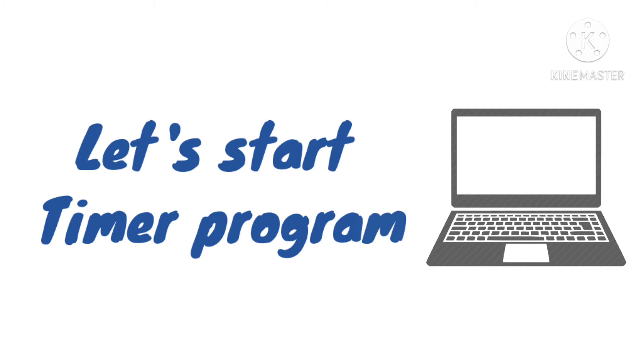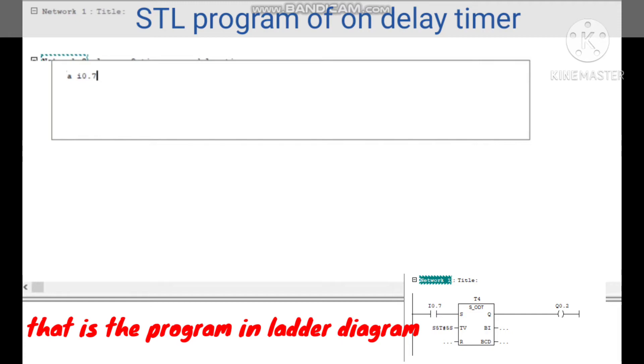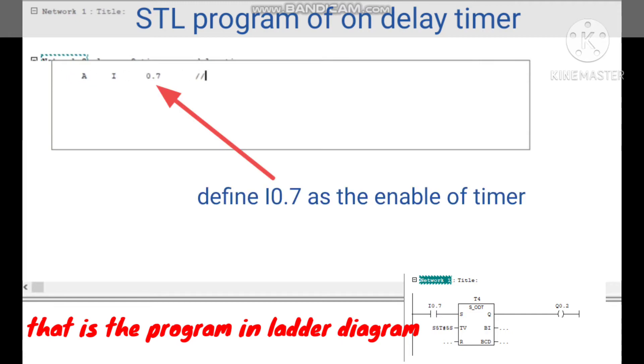Let's start programming. Firstly, we define IO.7 as enable of timer.